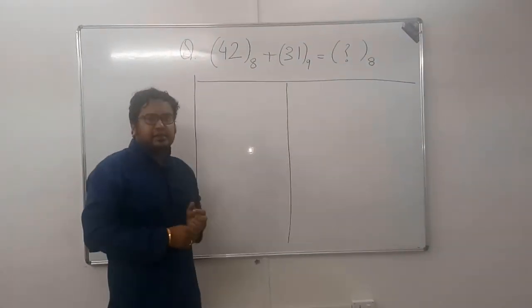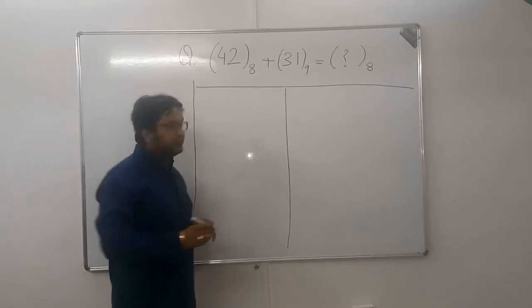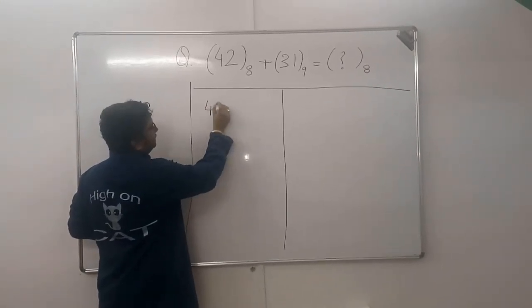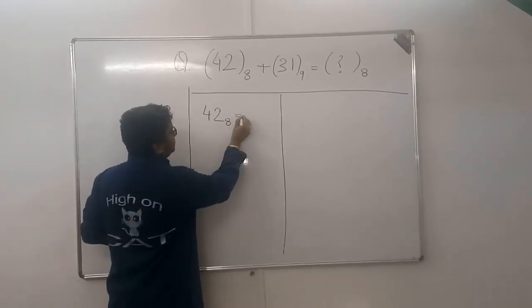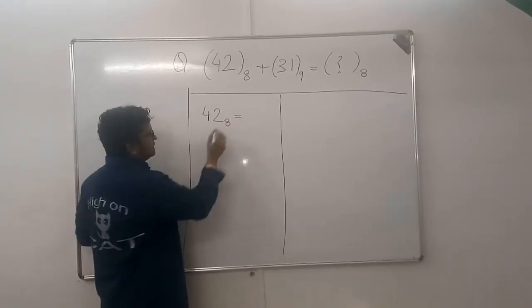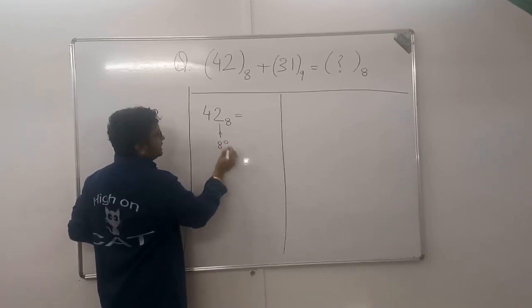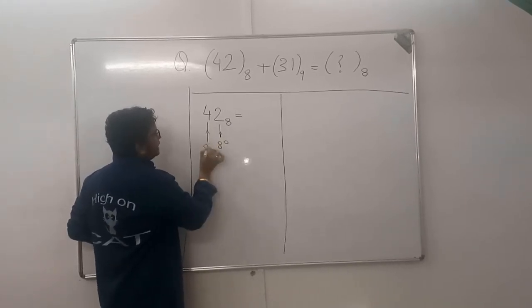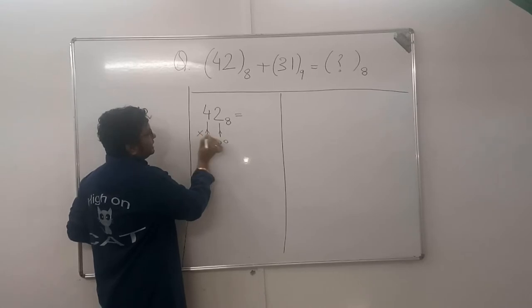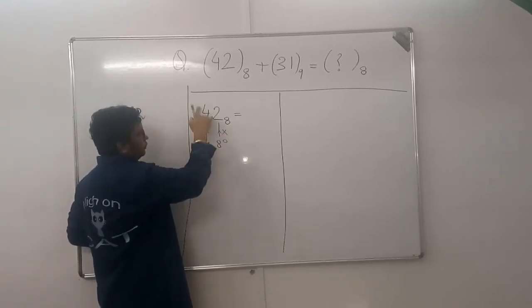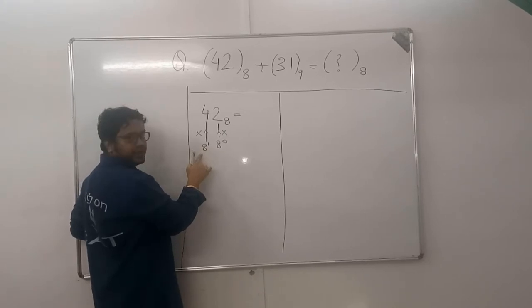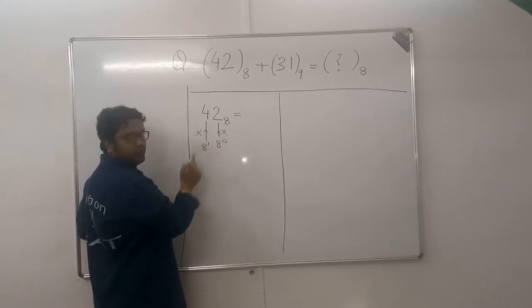Let's learn the conversion technique here. 42 in base 8, when you convert to base 10, you multiply with positional values starting from power 0. 8 to the power 0, 8 to the power 1, multiply these with the digits. 2 into 8 to the power 0, 4 into 8 to the power 1, and then add it. So it is a sum of product.